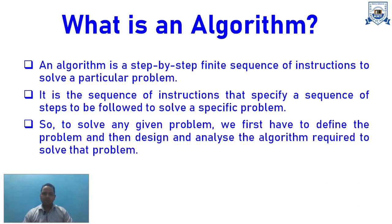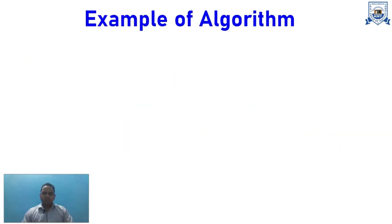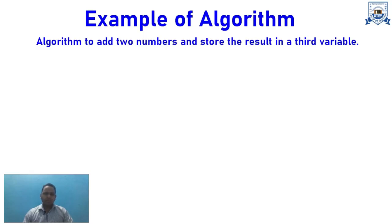To solve any given problem, we first need to define the problem, then design and analyze the algorithm required to solve it. As an example, let's write an algorithm to add two numbers and store the result in a third variable. We take input from the user, add them, and store the result in a variable.